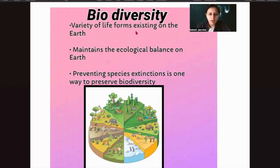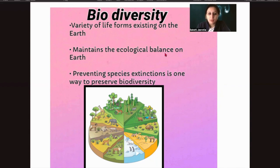What is the requirement of so many organisms — the variety of plants, microbes, animals, aquatic animals? It is very important to maintain the ecological balance on the earth. Our environment has a balance that must be maintained, and biodiversity is essential to maintaining that balance.